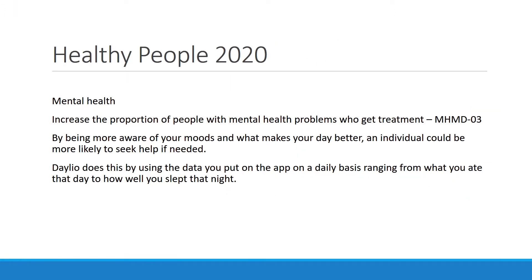We related this back to Healthy People 2020 and the aspect of mental health. This really helps you pay attention to the way that you feel about different things by journaling it and actually taking the time out of your day to think about these things. It helps you not only want to improve these things but actually do improve them.